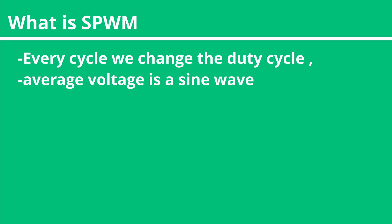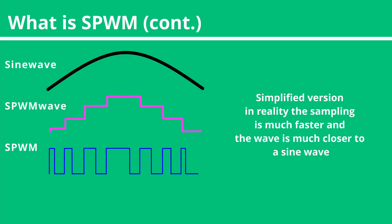The jump from here to sinusoidal PWM really isn't that big. All we have to do is have the duty cycle of our square wave increase and decrease in a sinusoidal way. I've greatly simplified this so the frequency is extremely low, but you can kind of see how this would work — a lower voltage being a shorter pulse and a higher voltage being a longer pulse.